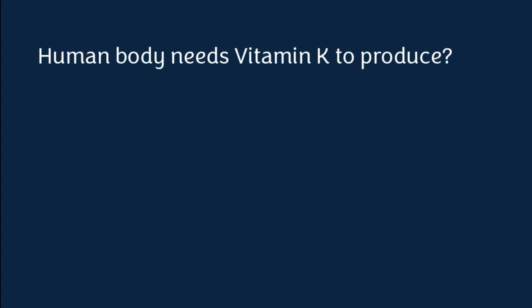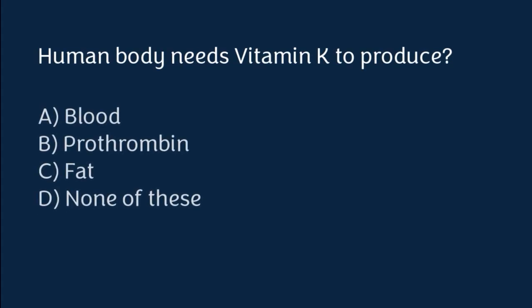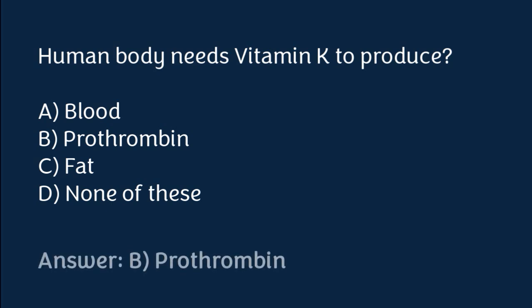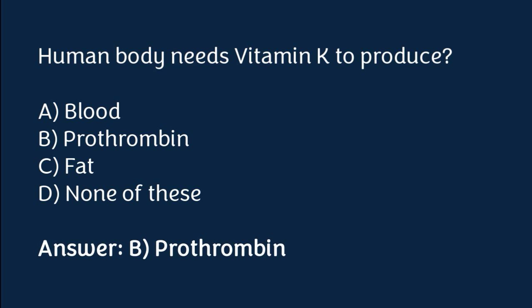Human body needs vitamin K to produce: blood, prothrombin, fat, or none of these. The correct answer is option B. Human body needs vitamin K to produce prothrombin.